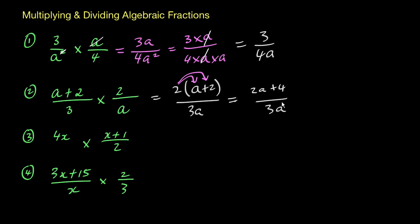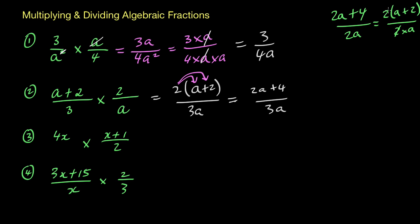An example where you could cancel things out would be if I change this to a different example — say (2a + 4) over 2a. I can notice there's a factor of 2 in 2a, a factor of 2 in 4, and a factor of 2 in the denominator 2a. So I can pull out the 2: that gives 2(a + 2) all over 2a. Now I can see the 2 is common across both values, so cancelling gives (a + 2) over a. You can only do that because 2 is common to both terms in the numerator — unlike our original question where a was not common across the entire numerator.